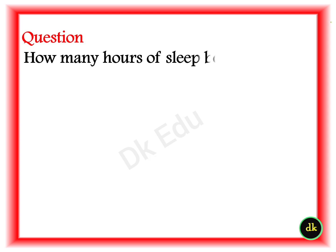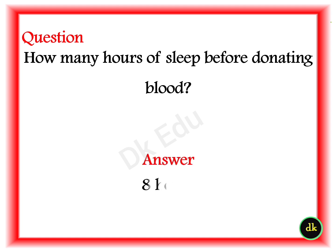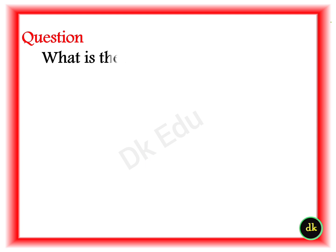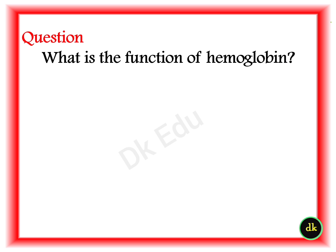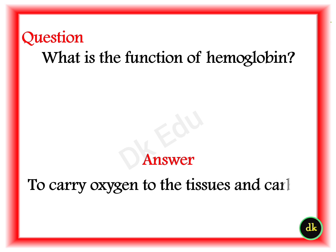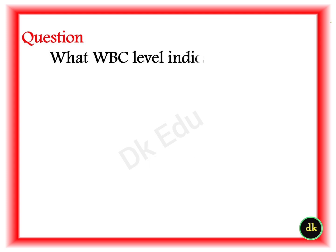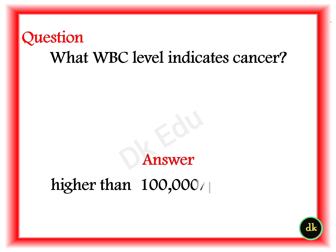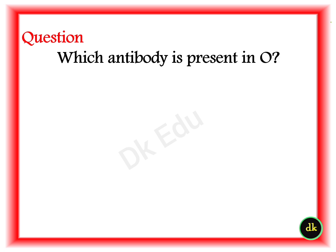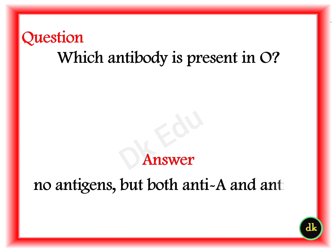Q: How many hours of sleep are needed before donating blood? A: 8 hours. Q: What is the function of hemoglobin? A: To carry oxygen to the tissues and carbon dioxide away from the tissues. Q: What WBC level indicates cancer? A: Higher than 1,000 cells per microliter or more. Q: Which antibody is present in blood group O? A: Group O has no antigens but both anti-A and anti-B antibodies are present.